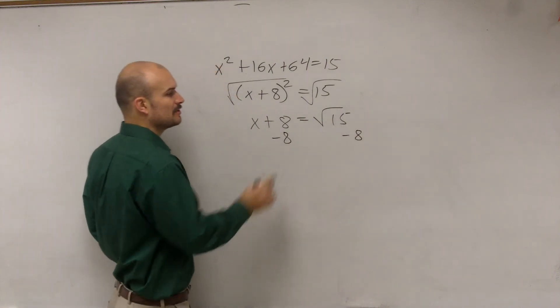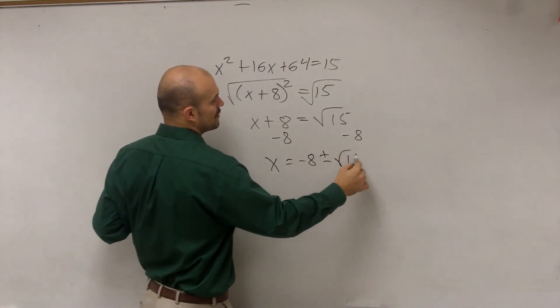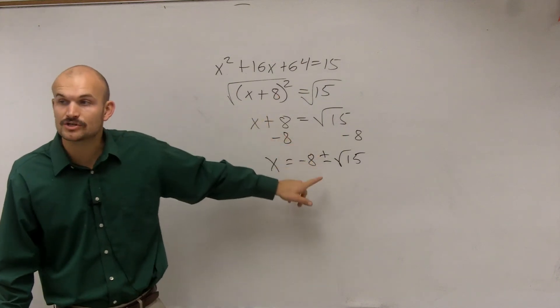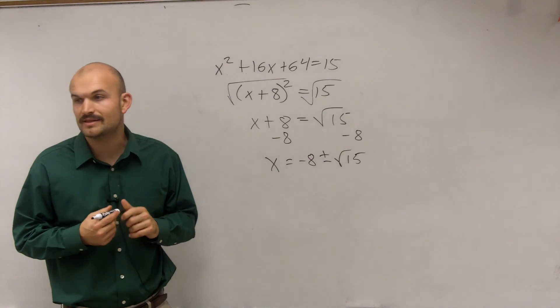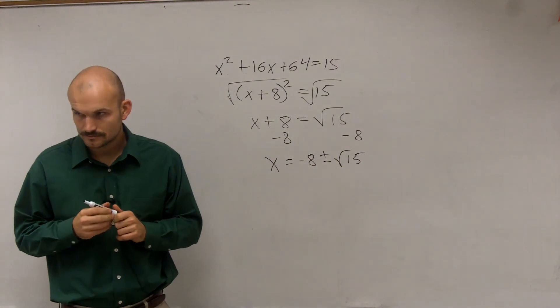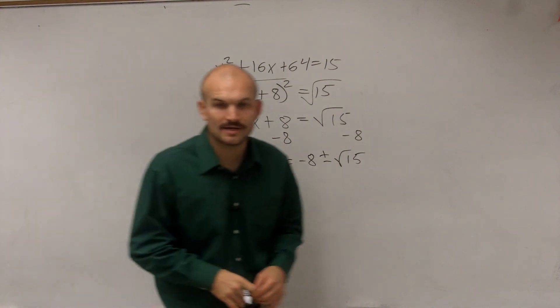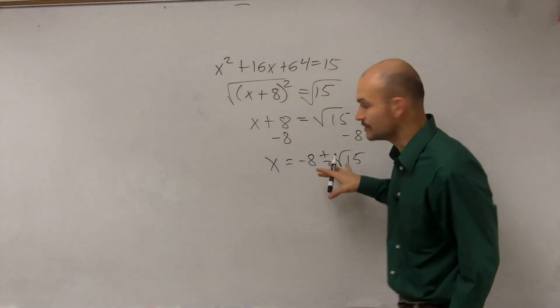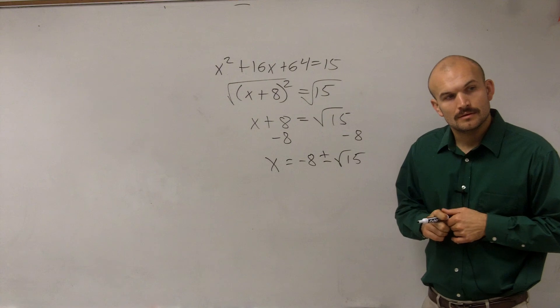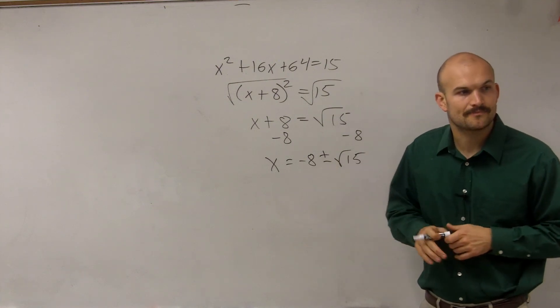And please remember, ladies and gentlemen, when you write your answer, x equals negative 8 plus or minus the square root of 15. When we introduce the square root, we have to make sure we include the positive and the negative value. I want to go against those directions, and I want you to leave your answer like this. Yes, you can. But I'd prefer you guys writing it like this. Okay?